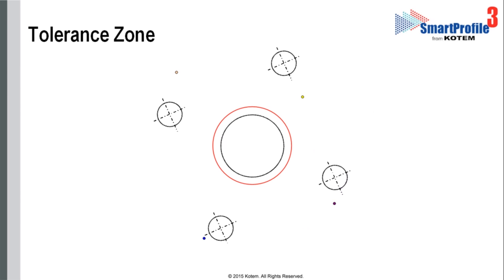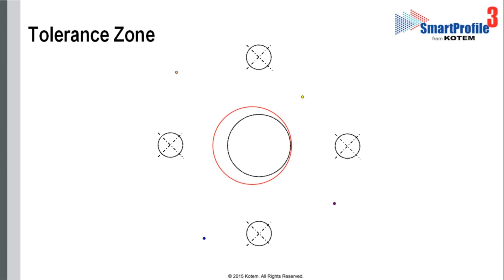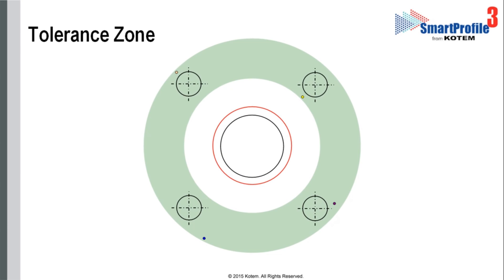Since the datum reference frame has no alignment constraint, each of the axis tolerance zones is allowed to translate and to rotate around datum B in order to minimize the deviations of any of the axes.